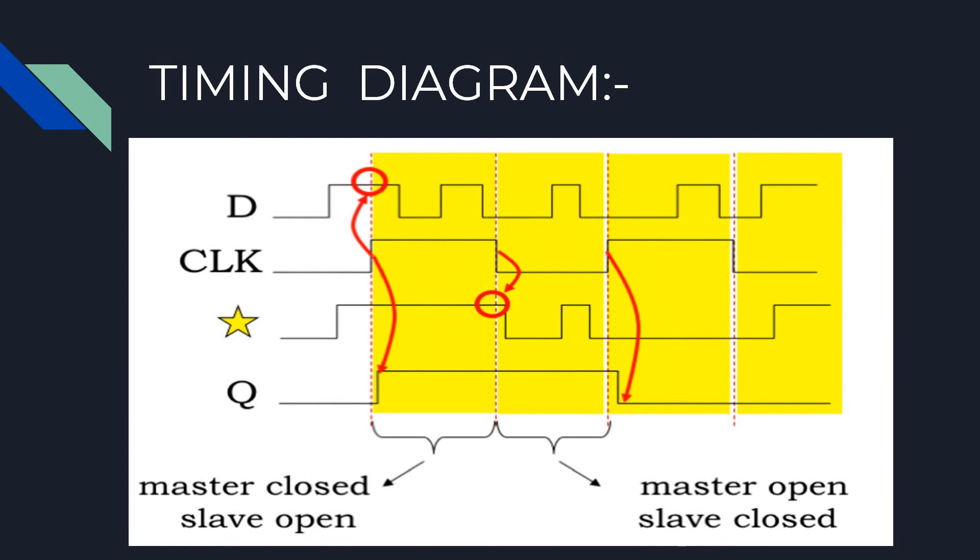At the falling clock edge, the slave goes from open to closed, sampling the value on its input and entering memory mode. The sampled value then becomes the output of the slave latch as long as the latch stays closed. You can see that the Q output remains stable whenever the clock signal is low.